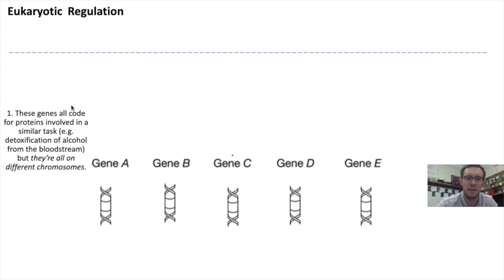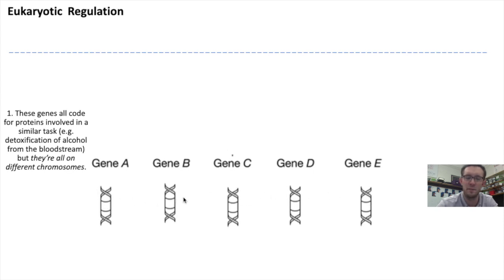Eukaryotic regulation works through similar tools, where it has the ability to repress and activate genes. But the difference with eukaryotic cells is that oftentimes the genes coding for proteins in a similar task are not right next to each other on the same chromosome — they're spread across multiple different chromosomes.